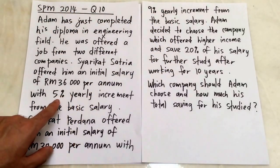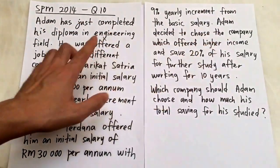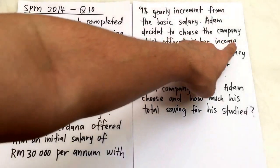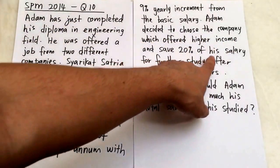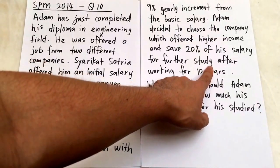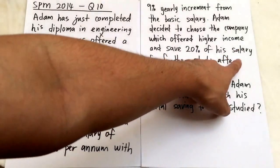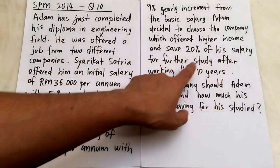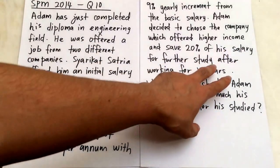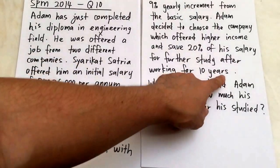Adam decided to choose the company which offers higher income and save 20% of his salary for further study. He wants to continue to study after working for 10 years. So 10 years here is a keyword because later when you do the progression you have to let n equal 10.